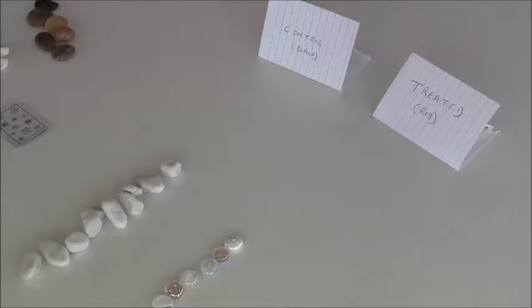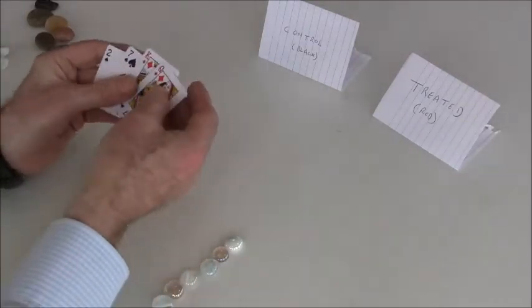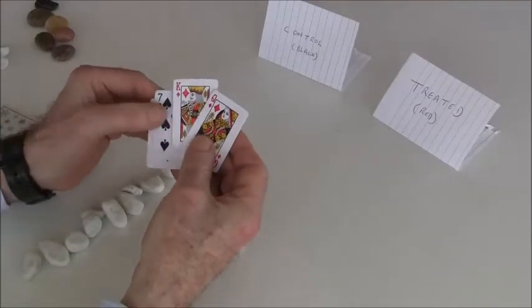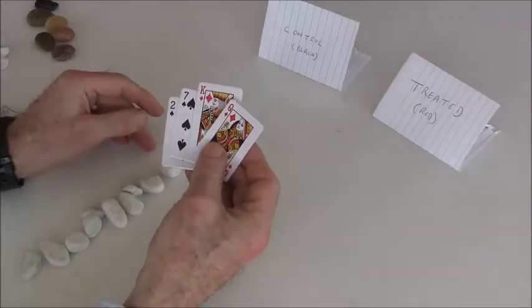And the other thing we do is that we control the randomization using what's called a block. So a block is just the number of people who are going to be randomized. So here we're going to have a block size of four and we have four cards, two reds and two blacks.